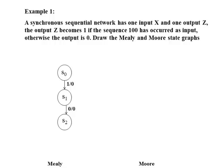Here the received sequence is 1, 0. Now when the network receives a 0 as input, the output will change to 1. And the network returns to the initial state S0.